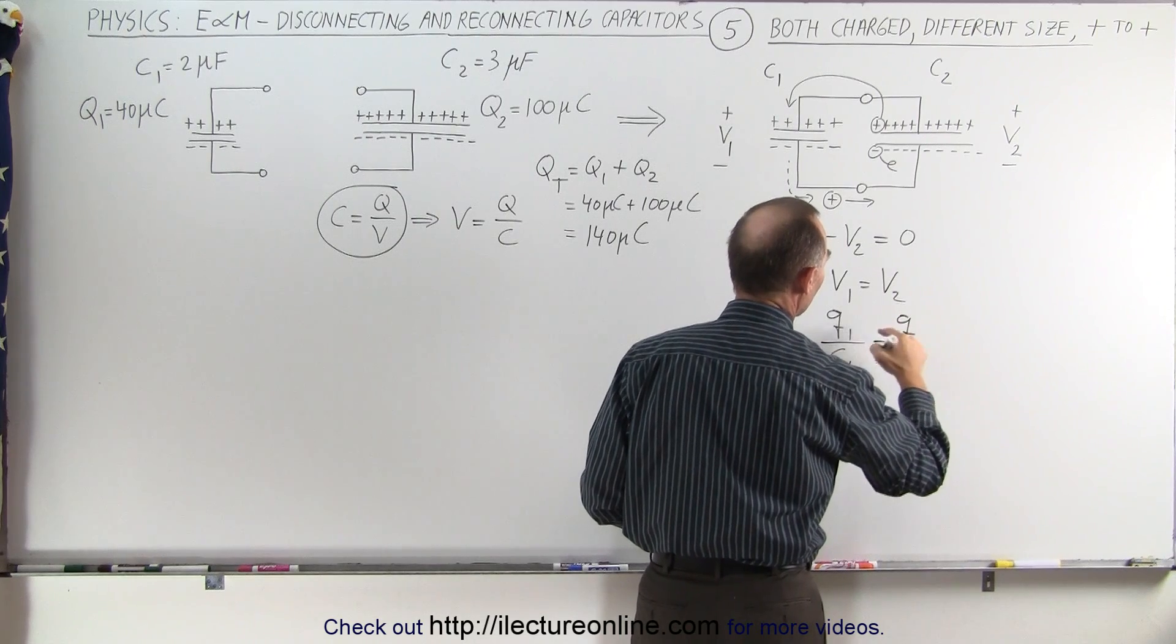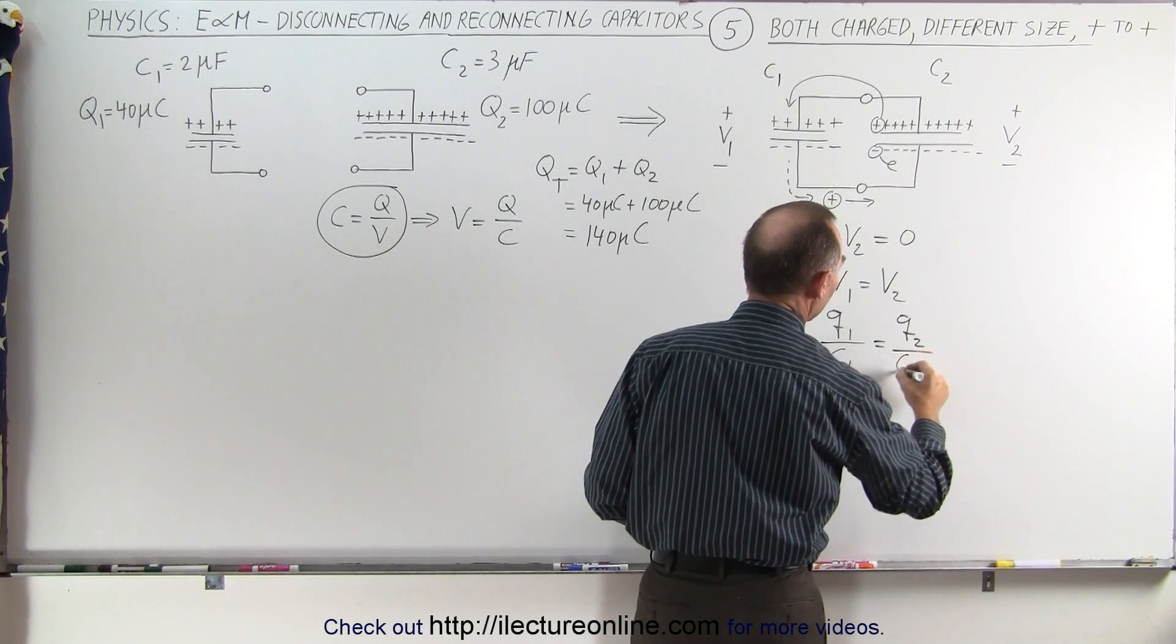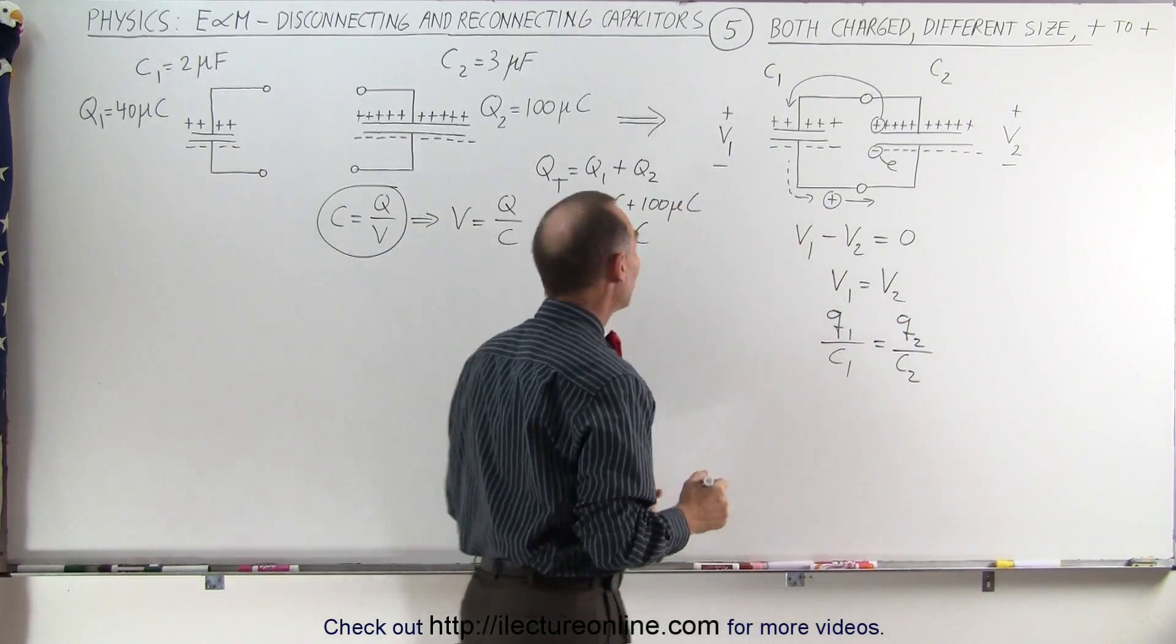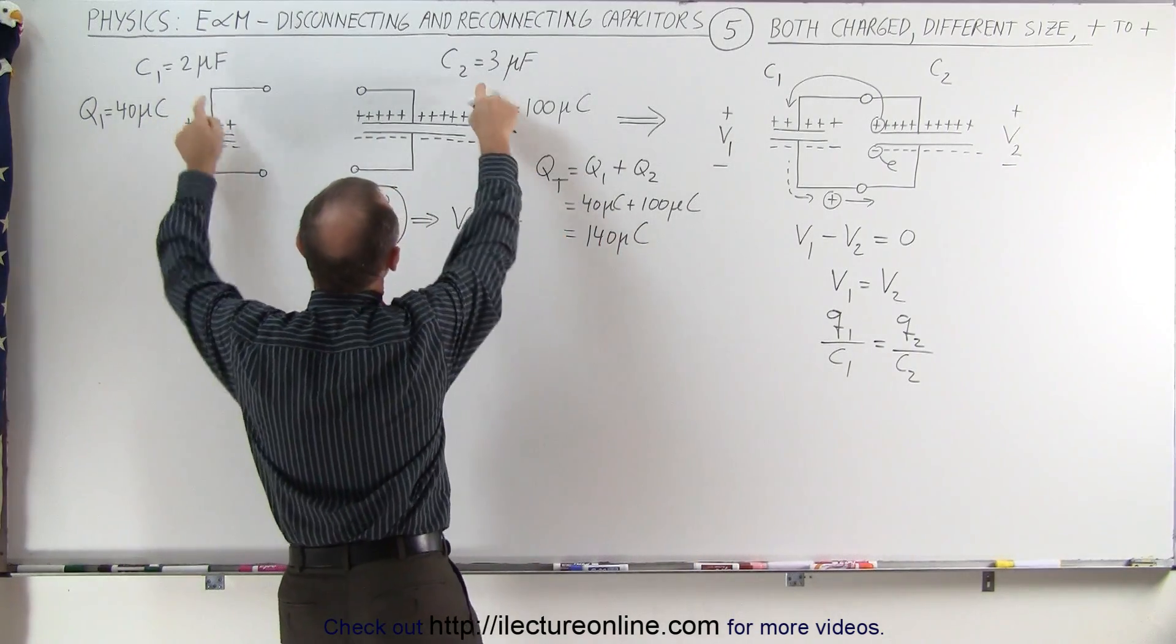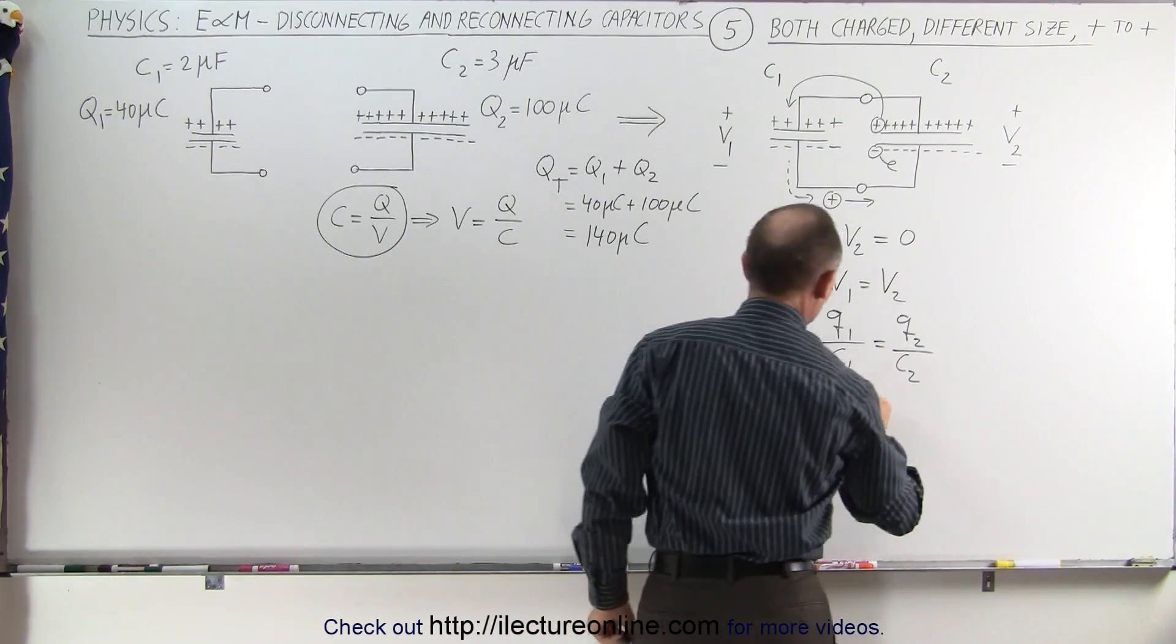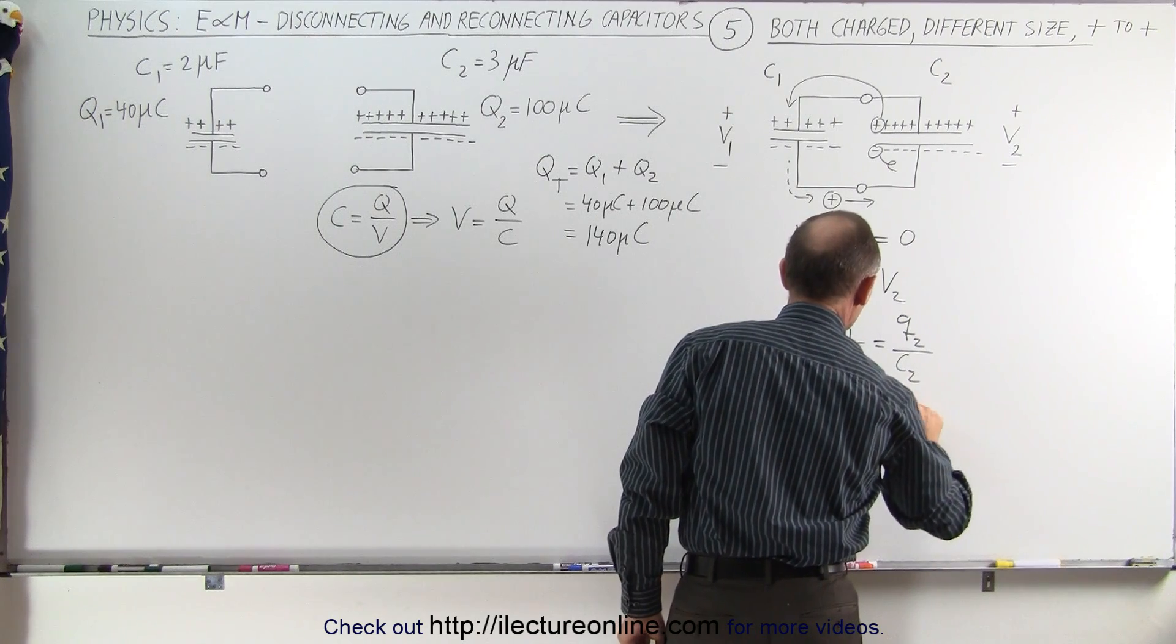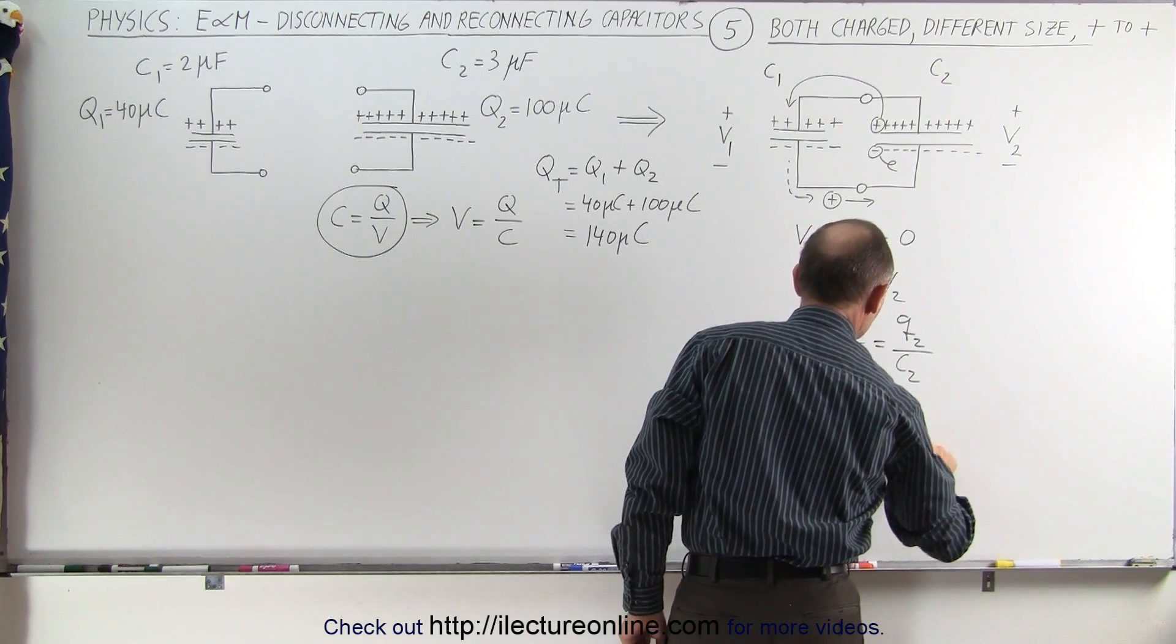Must equal the final charge on capacitor two, divided by C2. And since we know the values of C1 and C2, we can write that q1 divided by two is equal to q2 divided by three.